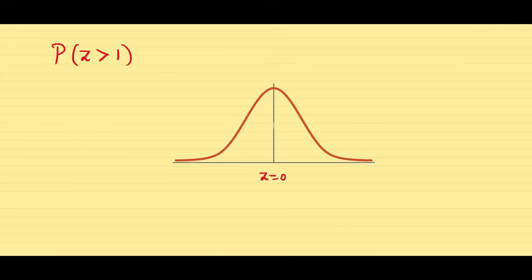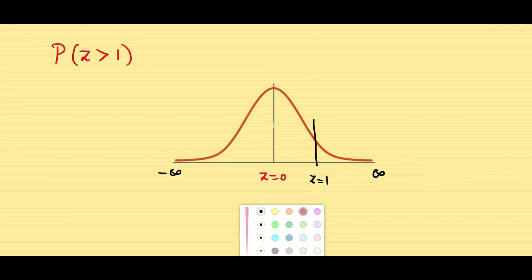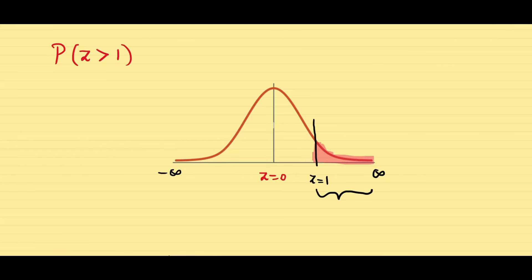I want to find the area for z greater than 1. The curve goes from minus infinity to infinity, and since the midline is z equal to 0, z equal to 1 is somewhere to the right. I want to find the area to the right of z equal to 1, going up to infinity. But my table contains area values only from 0 to 3, not to infinity.